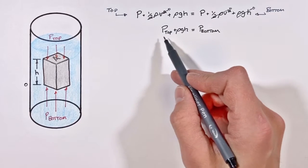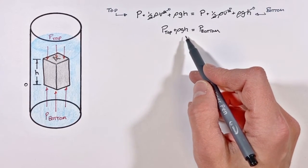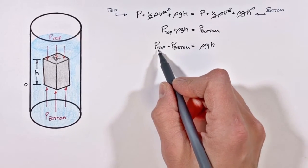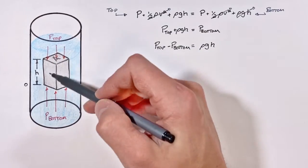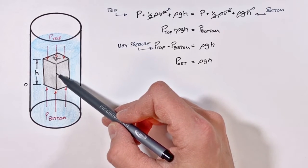So to solve for the buoyant force, we're going to rearrange this so that our static pressure terms are on one side and our hydrostatic term is on the other. And to make things simple, let's just say this difference in pressures is effectively the net pressure across this block. Now remember, we're trying to get to the buoyant force.